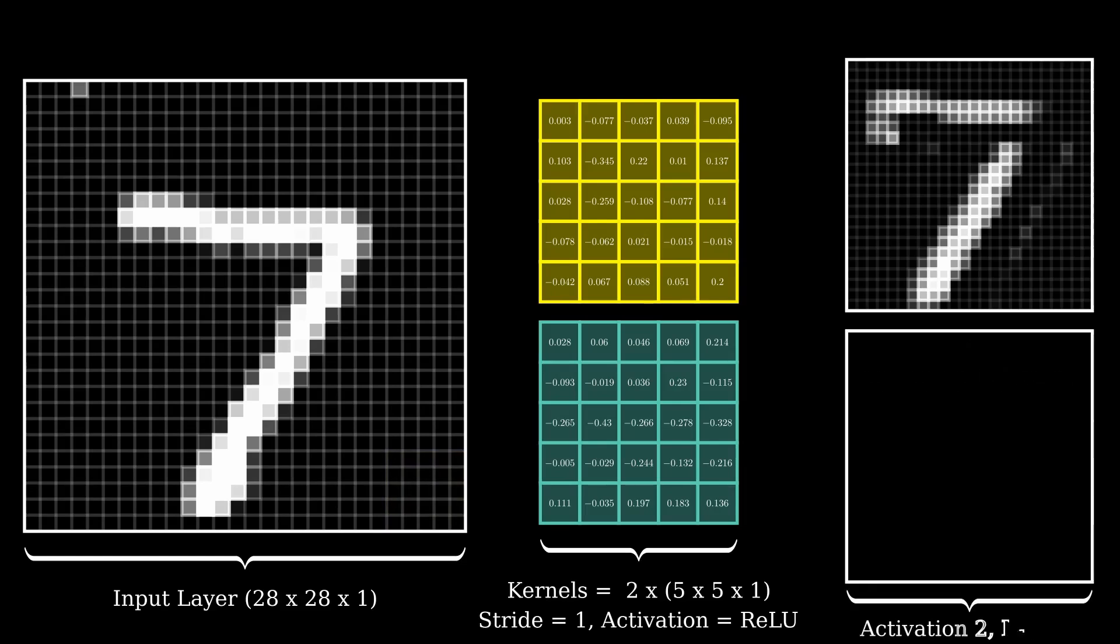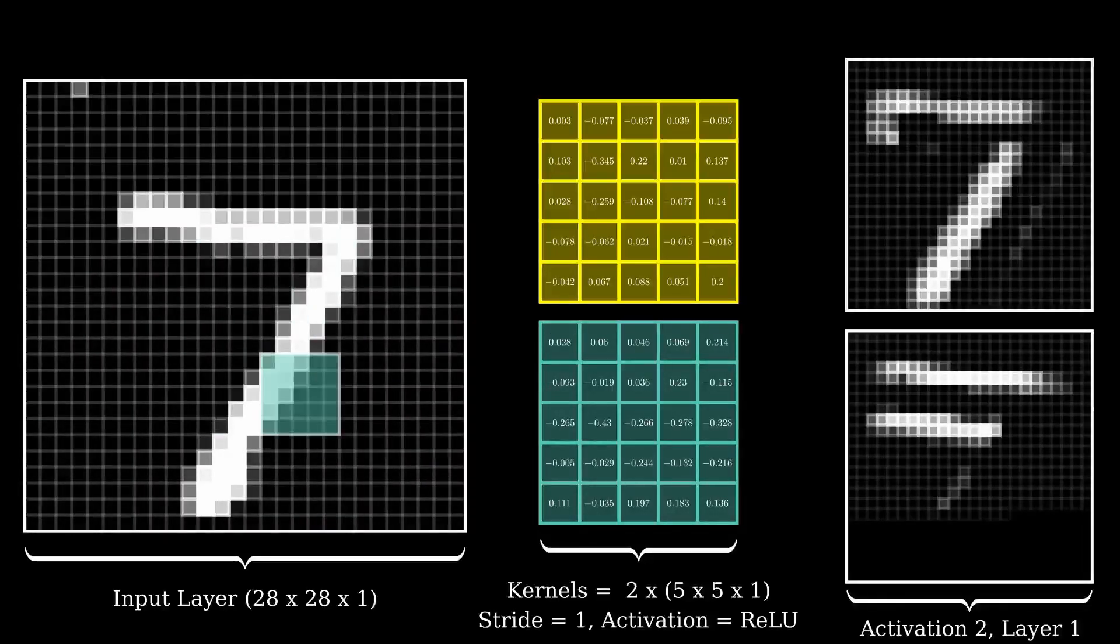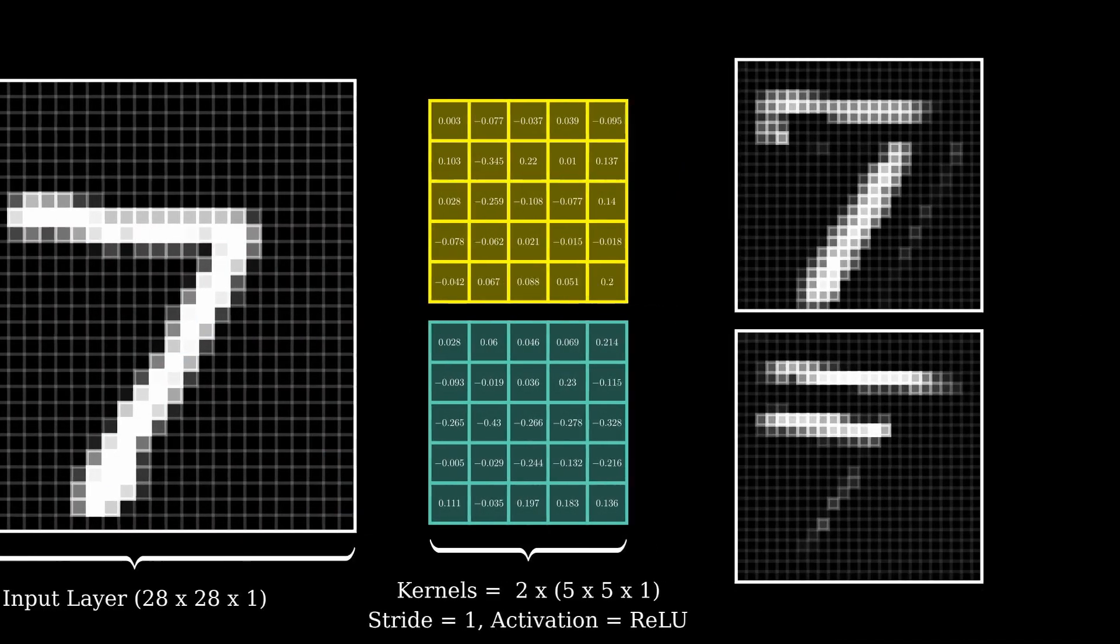Then, we do the exact same thing for the second filter, and map the output onto activation 2 in the first layer, and move on.